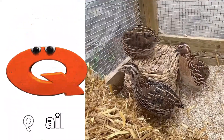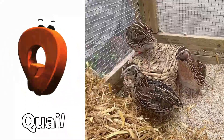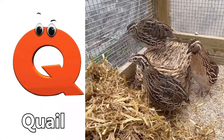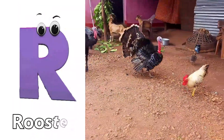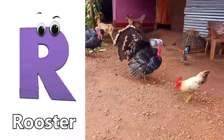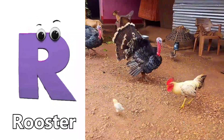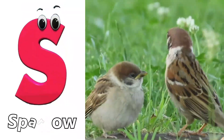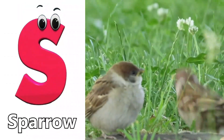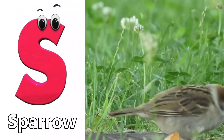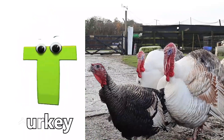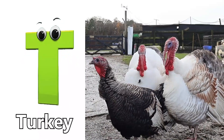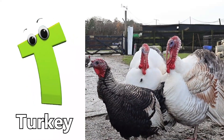Q is for quail. Quuh, quail. R is for rooster. Rr, rooster. S is for sparrow. Suh, sparrow. T is for turkey. Tuh, turkey.